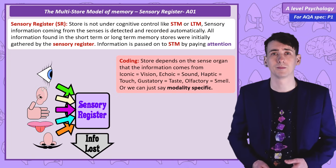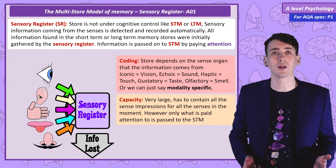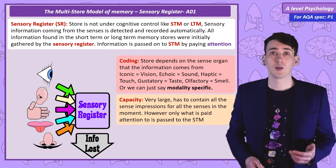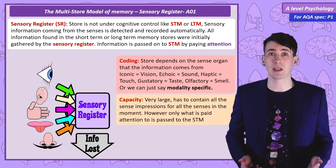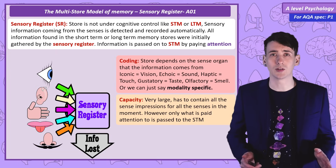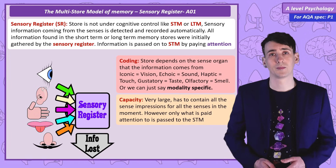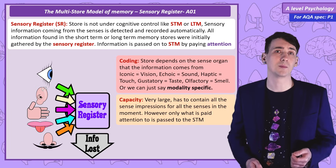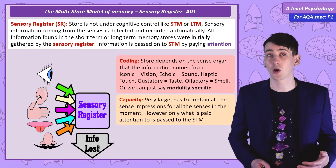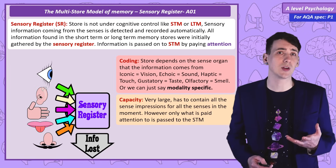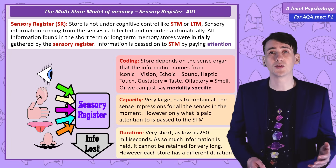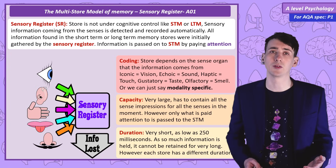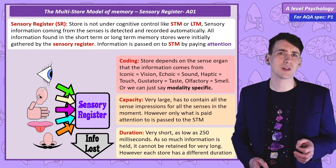It depends on the sense organ. The capacity of the sensory register is very large, potentially unlimited. Your brain needs to detect all of the sensory information you receive in each moment — all the visual information coming into your eyes, all the sounds you hear, even all the touch sensations from across your body, as well as taste and smell. The sensory register has a very short duration; we can use the figure of 250 milliseconds — a quarter of a second — before information is lost.